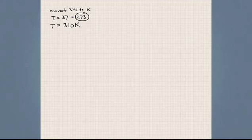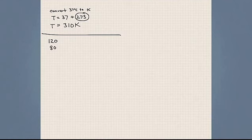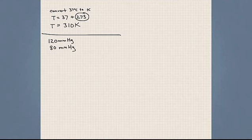Next is a pressure problem. When you go to the doctor or dentist, they'll tell you your blood pressure is 120 over 80, which is a typical healthy blood pressure. What does 120 over 80 mean? These are units of pressure — specifically, 120 millimeters of mercury and 80 millimeters of mercury. Even though it sounds like a length, it is indeed a unit of pressure.